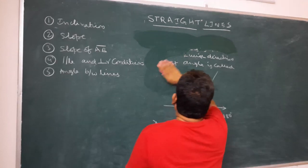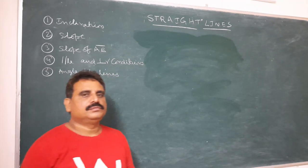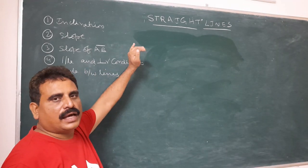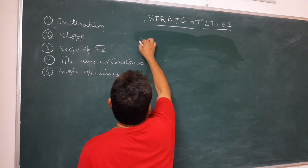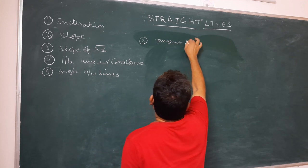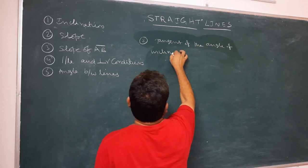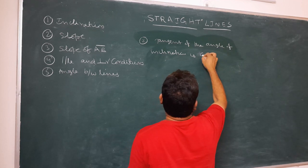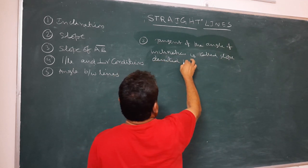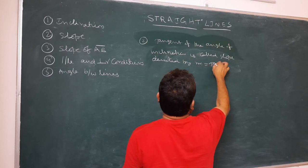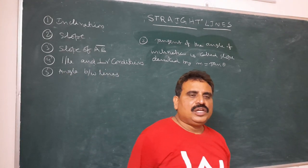The second concept: the tangent of the angle of inclination is called slope, denoted by m. So slope m = tan θ, and m is a real number. If theta is 90°, then tan 90° is infinity, which is not defined.